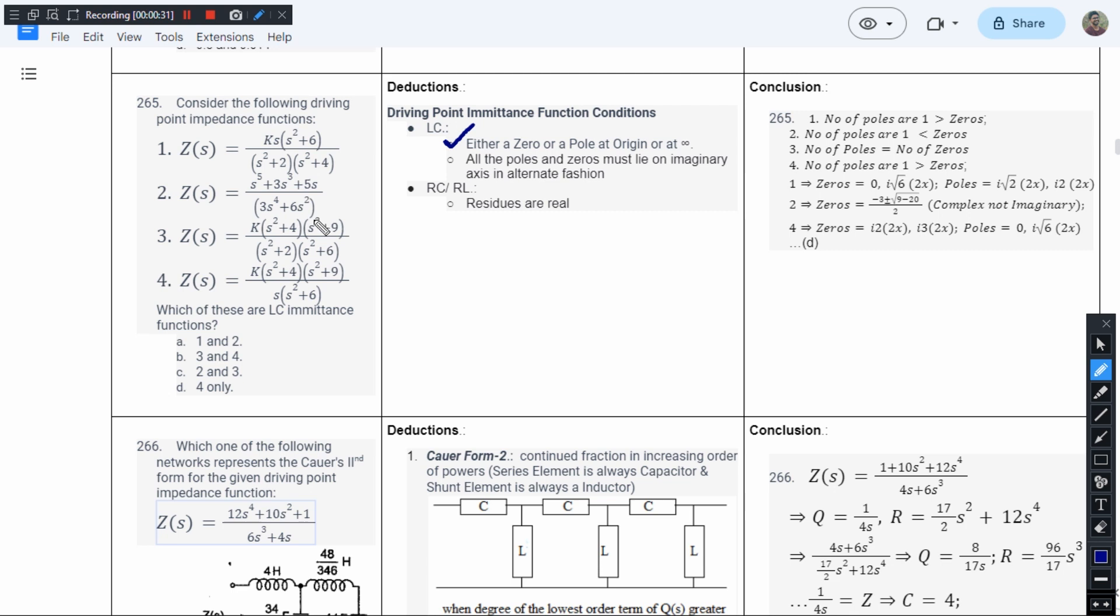You will have one less degree either in the numerator or in the denominator. So in the first one, the poles are here - we have s² and here we have s⁴. So here poles are greater than zeros, so this could be the answer.